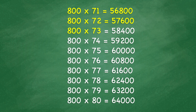800 times 73 equals 58,400. 800 times 74 equals 59,200. 800 times 75 equals 60,000. 800 times 76 equals 60,800.